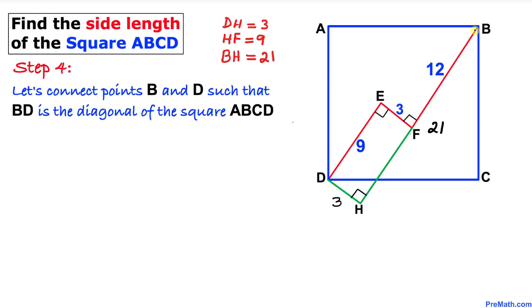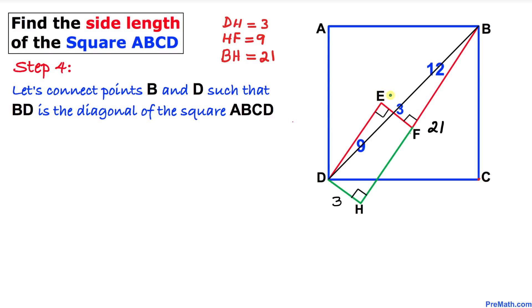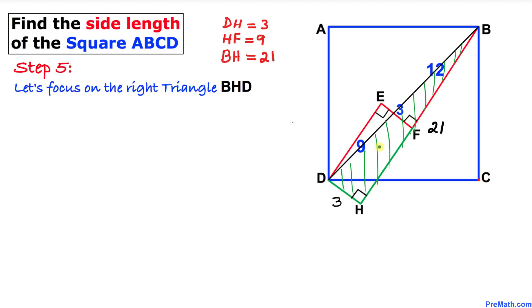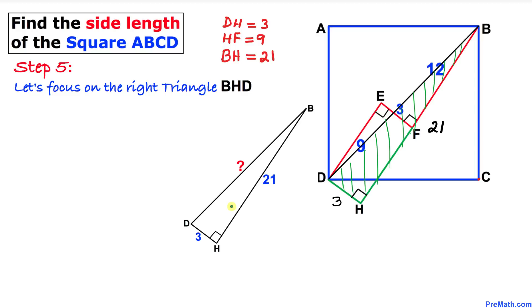Next, we connect vertices B and D. Line segment BD is the diagonal of square ABCD. Now let's focus on right triangle BHD, which I have shaded. Copying it: side BH is 21 and side DH is 3. We need to find length BD.